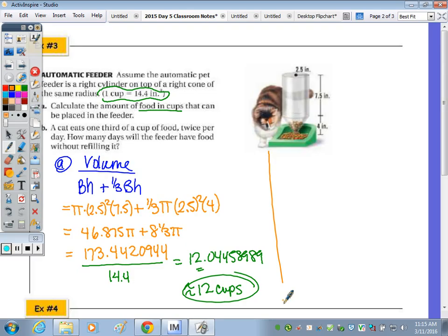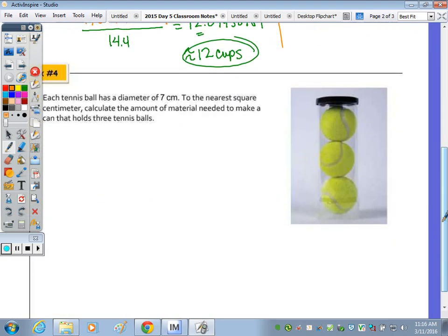In part B, it says a cat eats one third of a cup of food twice per day. How many days will the feeder have food without having to refill it? If the cat eats a third of a cup of food twice per day, they're eating per day two thirds cup of food. So for part B, we want to take the 12 and divide it by two thirds. So to divide, we actually multiply the 12 by the reciprocal of two thirds, which is three halves, and we get 36 over two or 18 days.